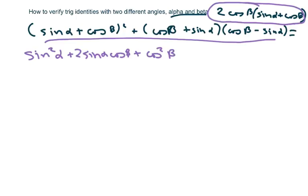And this is your difference of squares here, so that's just going to be plus cosine squared of beta minus sine squared of beta.